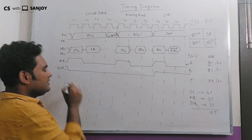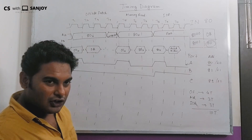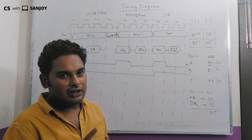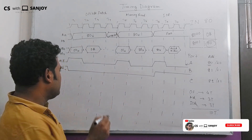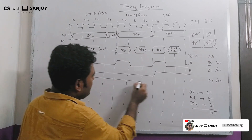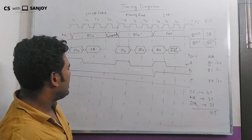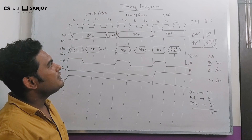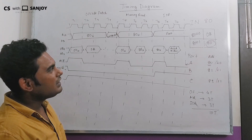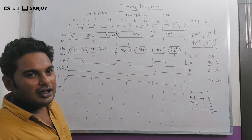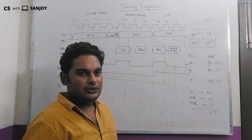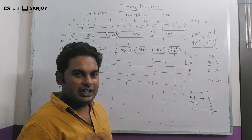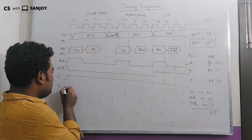There is one status signal. The status signal is high. For the opcode fetch, S1 is 1; for memory read, S1 is 1; and for IO read, S1 is 1. Then S1 goes to 0 for the next part. So for the opcode fetch, S1 is 1 and memory read is 0, indicating a read operation.